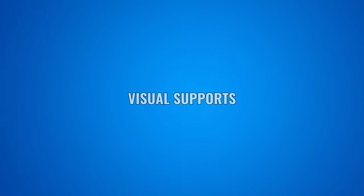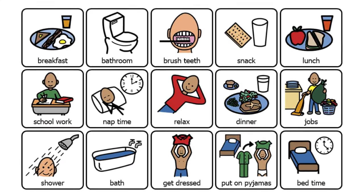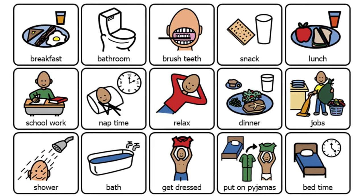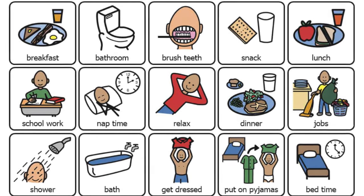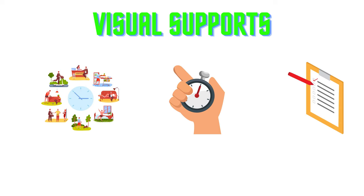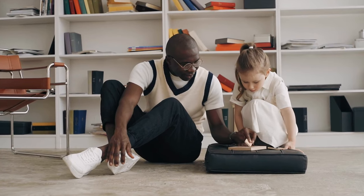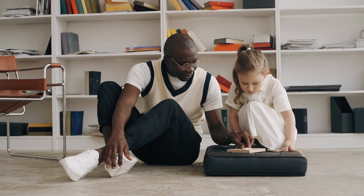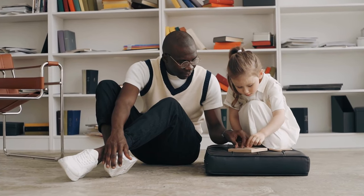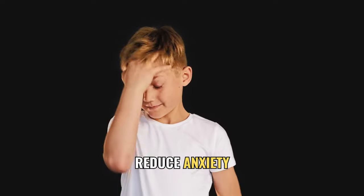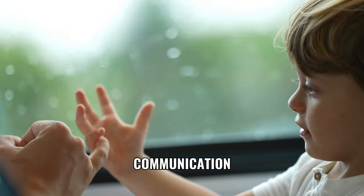Visual Supports can also be an effective tool for individuals with autism. Visual Supports can include visual schedules, timers, checklists, and other visual aids that provide structure and predictability. These supports can help individuals with autism understand what is expected of them, reduce anxiety, and improve communication.